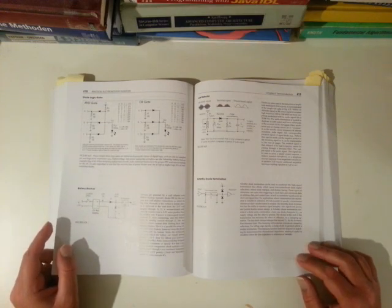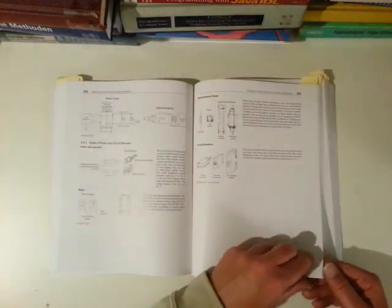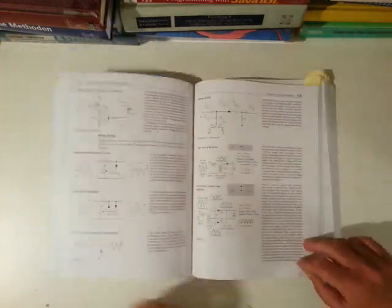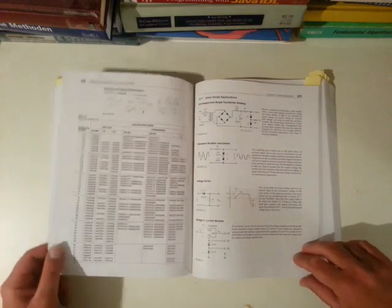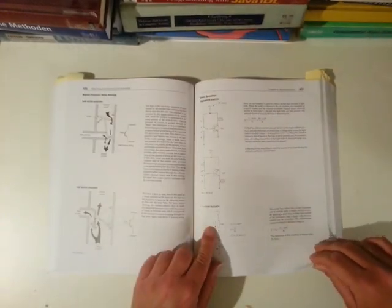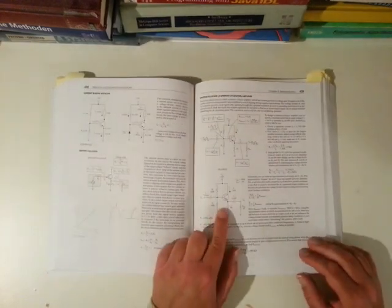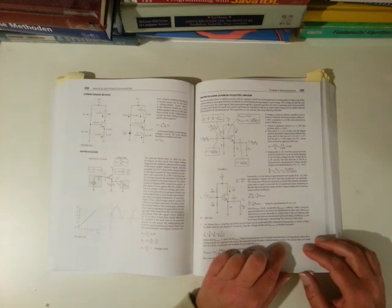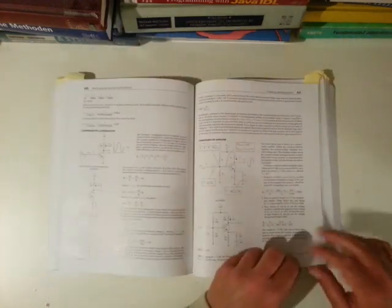Same is true for the semiconductor chapter, especially for the foundations of them. Here you see the basic stuff like diodes and then later transistors. In fact, the calculations of transistor circuits, it's not so great. There are maybe other books that are more accurate here, but it's still okay.